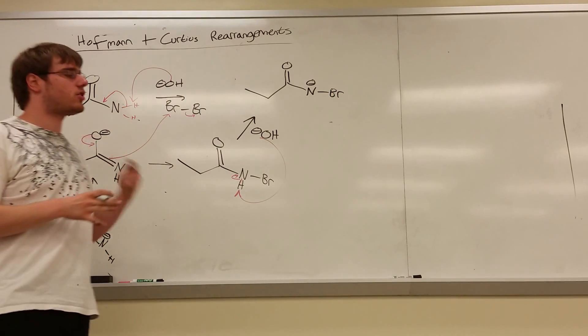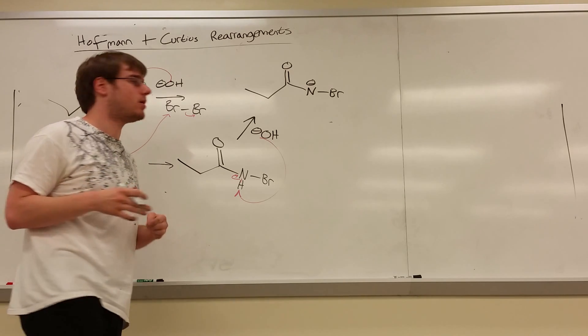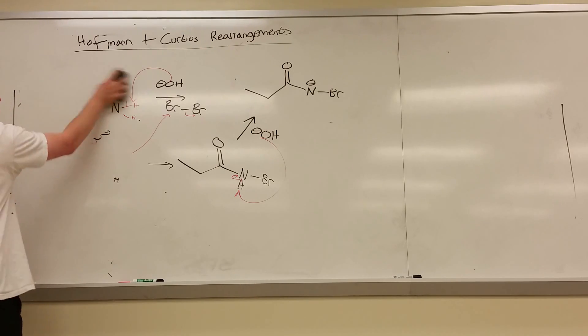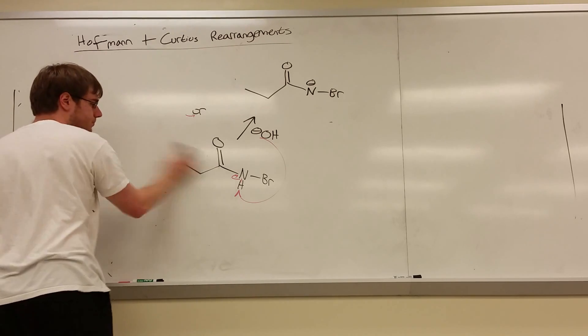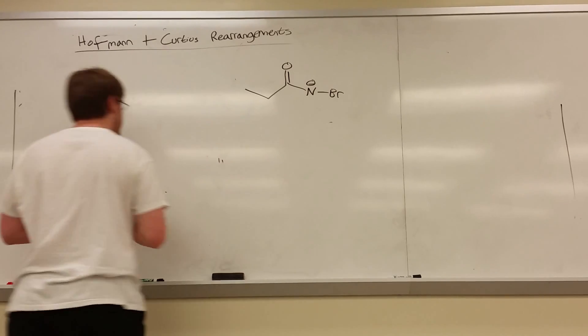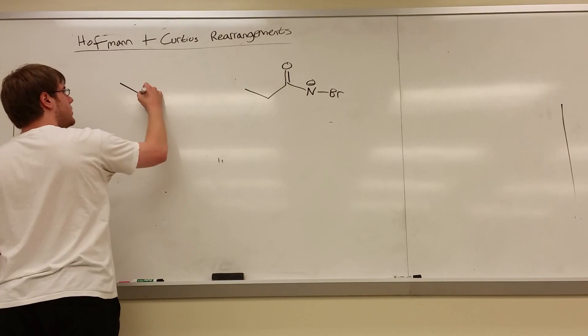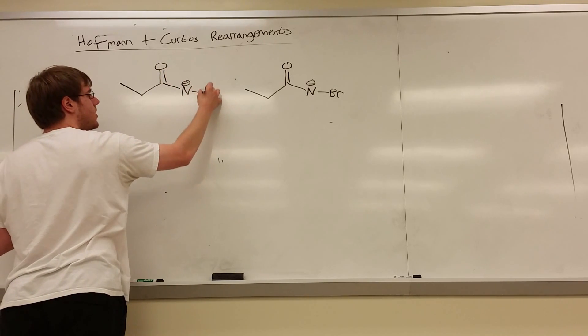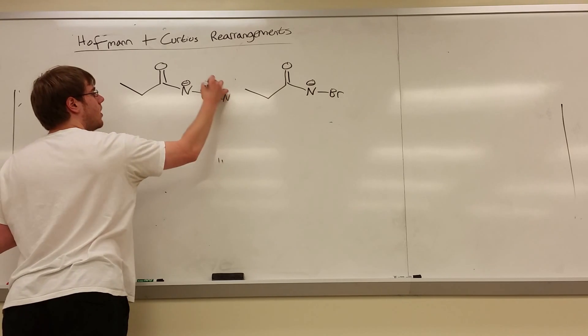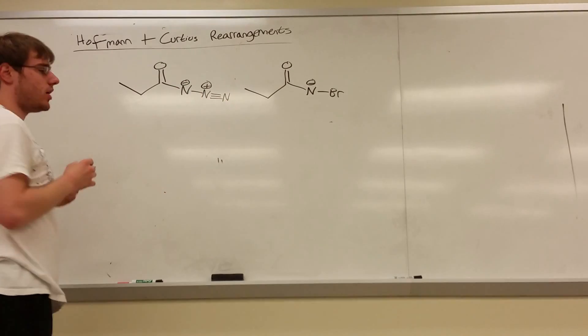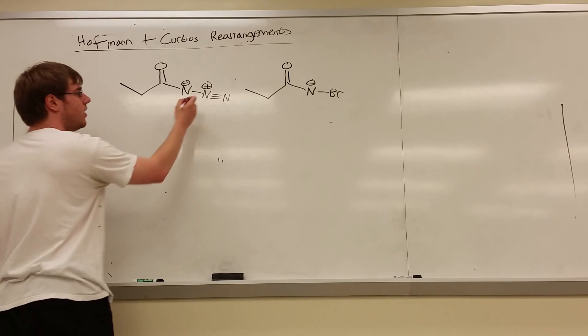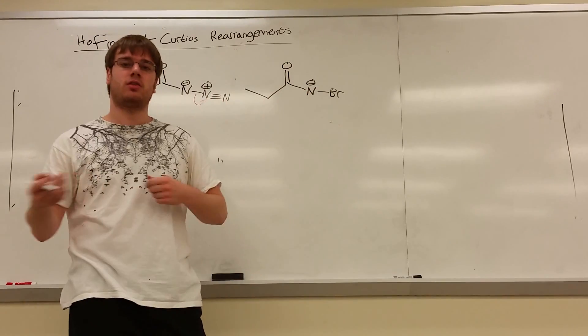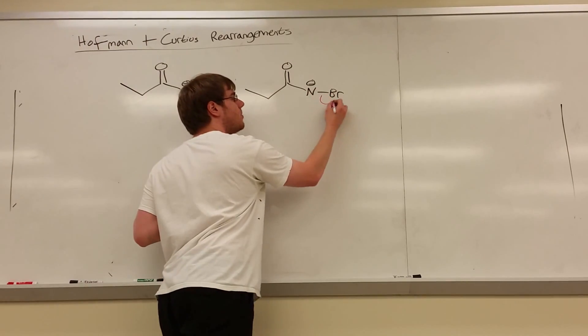But now what happens? One more time, that OH minus is going to come in and deprotonate your nitrogen. So grab that proton, and now your nitrogen is going to be negative. So you'll have double bond O, N minus Br. And this is where the Hoffman and the Curtius start to look the same. So from here, I'm going to draw out the Curtius reactant, and we're going to compare it. So we said that the Curtius reactant looked like this, with an N3: N minus, with N2 plus on it.